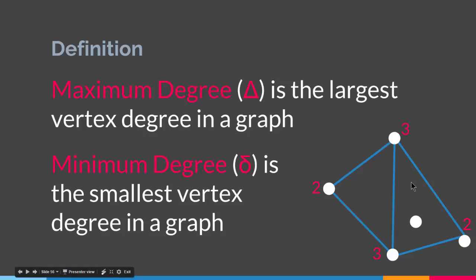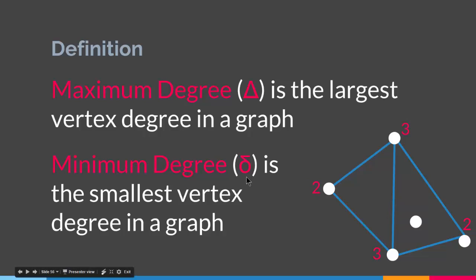For example, this vertex is degree 3, this vertex is degree 2, this vertex is degree 3, this one is degree 2, and this one is degree 0. The maximum degree, or delta (Δ), of this graph is 3 because 3 is the largest vertex degree. The opposite idea is minimum degree, denoted by lowercase delta (δ), which is the smallest vertex degree in the graph — in this case 0, since we have a vertex of degree 0.